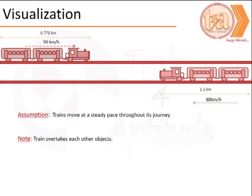From the data that we have, we can visualize the problem as follows. Two trains moving in opposite directions. This slower train on the lower track and the faster train on the upper track. Our assumption as always is that the two trains move at a steady pace throughout their journey.